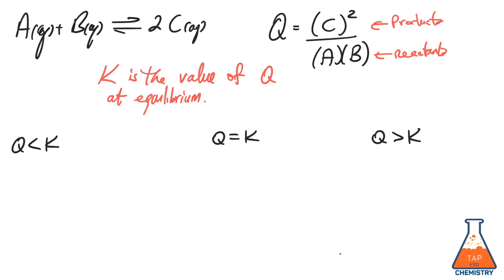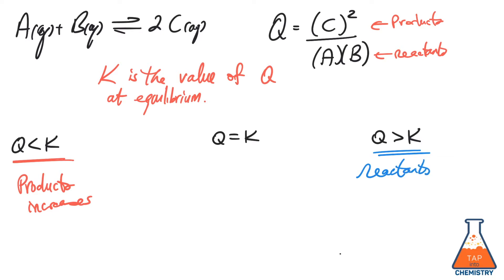If Q is less than K, that means the ratio of products to reactants is not yet quite right to be at equilibrium — the amount of products will have to increase in order to reach equilibrium. Conversely, if Q is greater than K, the ratio of products to reactants is too large, which means reactants will increase as we move towards equilibrium. And finally, if Q happens to be equal to K, the ratio of products to reactants is exactly what we would expect at equilibrium, and so this ratio will not change over time.